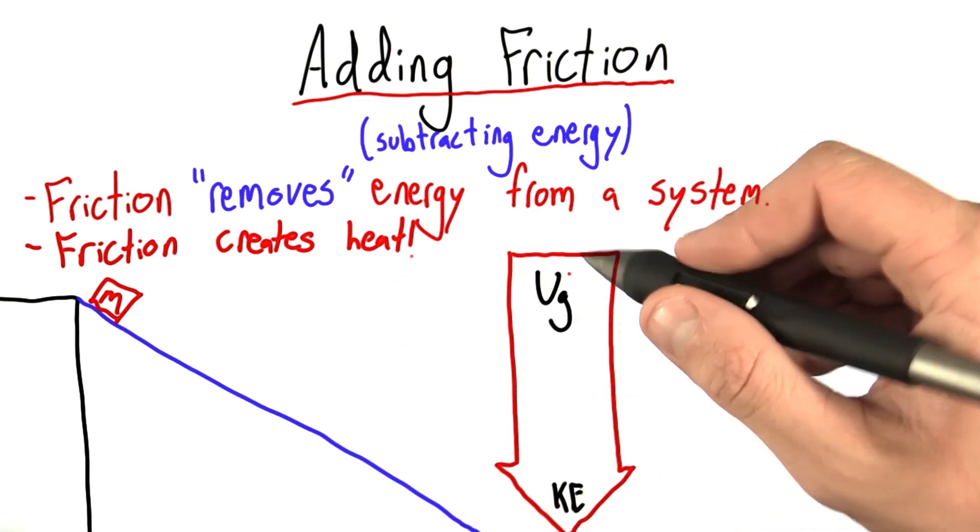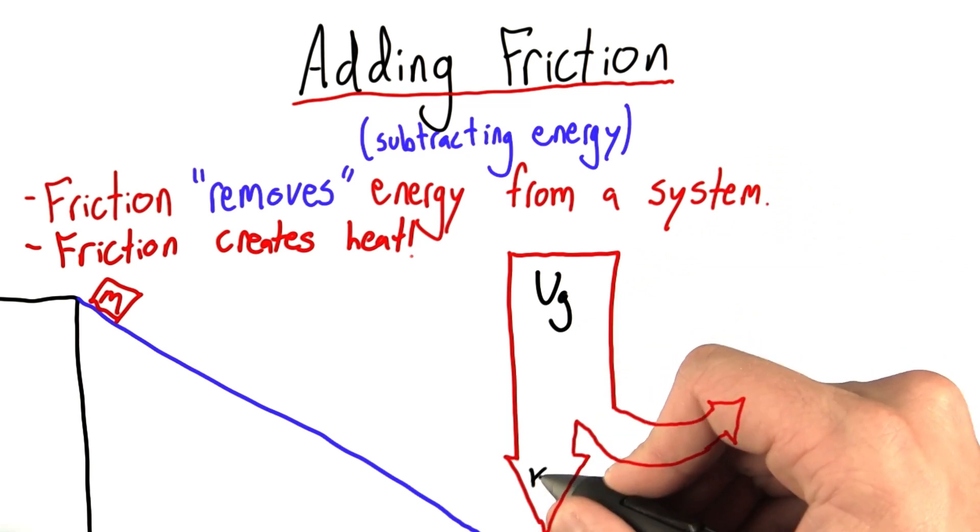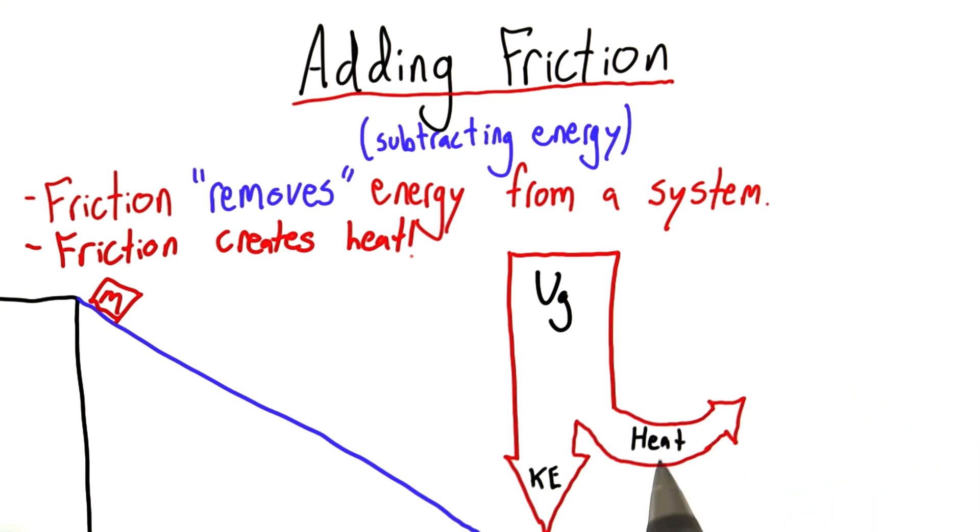So if we start with a certain amount of gravitational potential energy, some of it gets converted to usable kinetic energy, but some of it gets lost as heat. The energy is still there, it's just that we can't really use it anymore. It's lost as heat to the atmosphere.